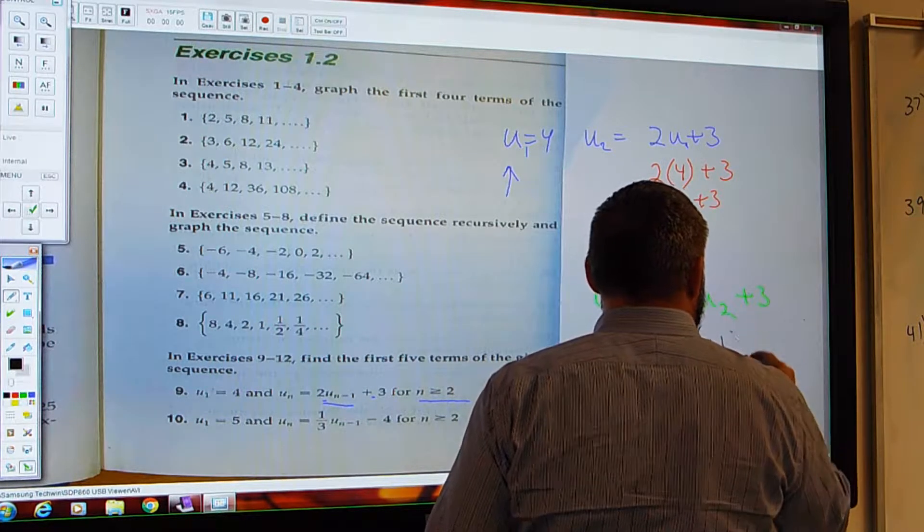And then how do we get U sub 3? Can we do the same thing? What's U sub 3 equal to? 2U sub 2 plus 3 still. Exactly. So that's just 2 times 11 plus 3.